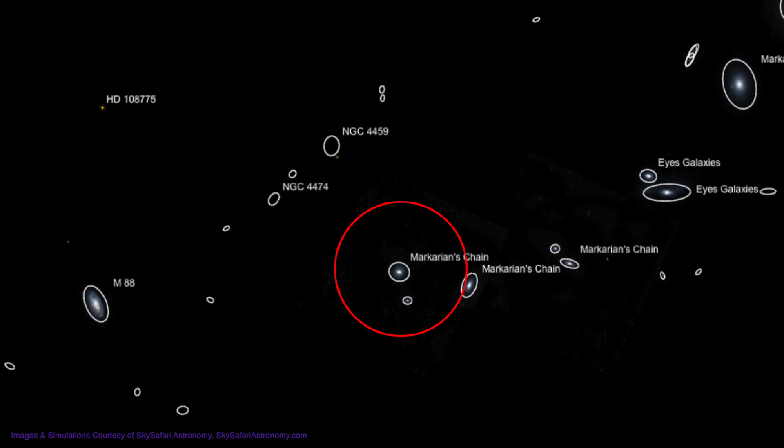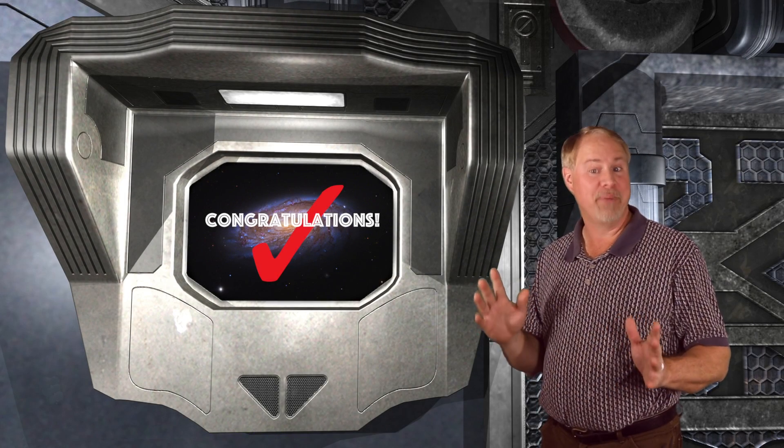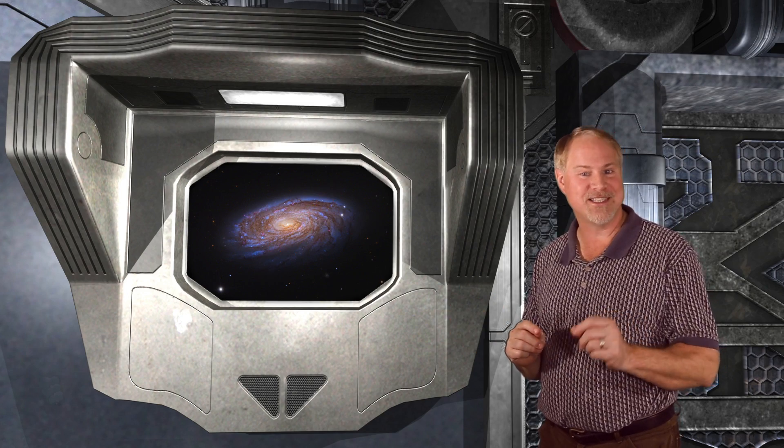Okay, one more target if you're so inclined. You're here, right? So you might as well. This will be a final reward to your trip down Markarian's chain. Move a degree to the left, and you'll see the beautiful spiral galaxy Messier 88, shining at a comparatively bright magnitude 9.6.